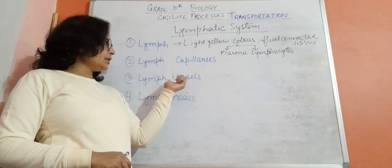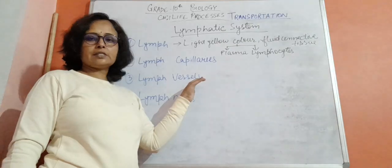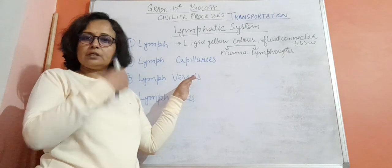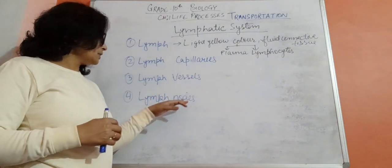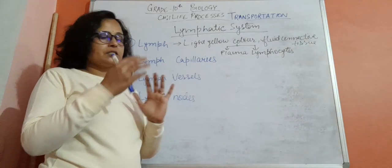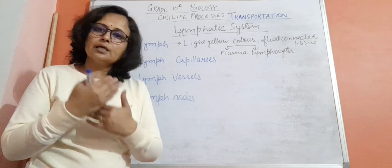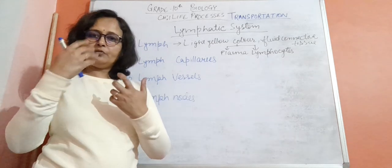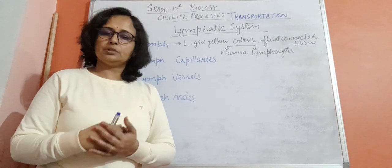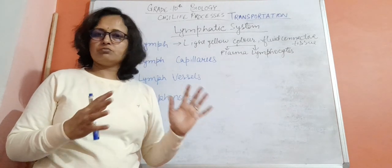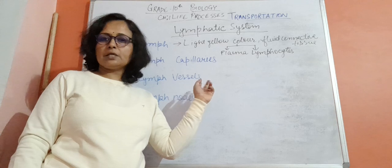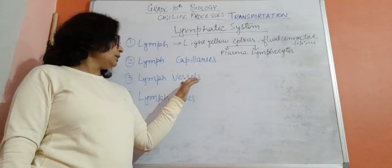From the thin lymph capillaries, lymph moves into a thicker tube called the lymph vessel. The lymph travels through the lymph vessels toward the heart, where the veins of the system carry it to the heart. This brings materials useful for purification, which come through the lymph vessel.